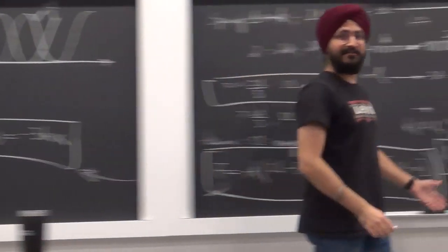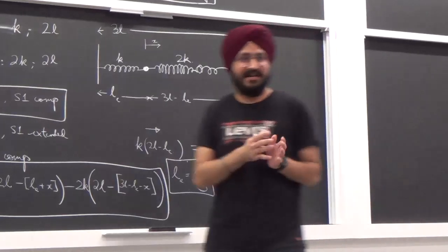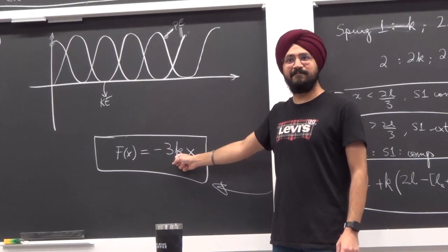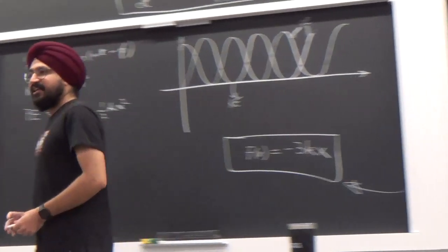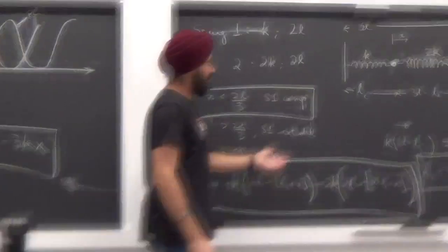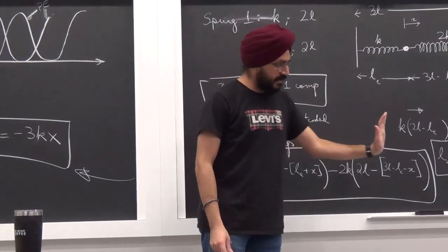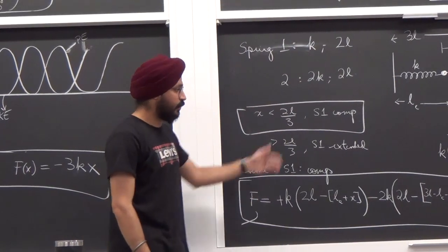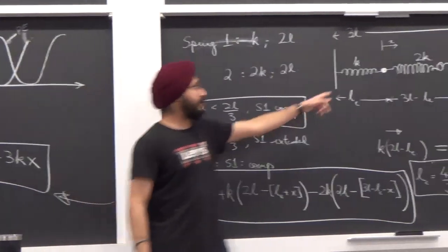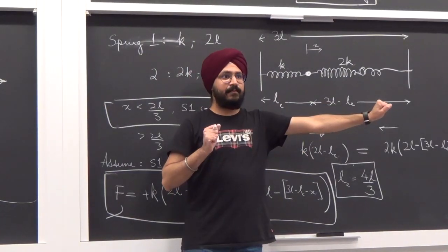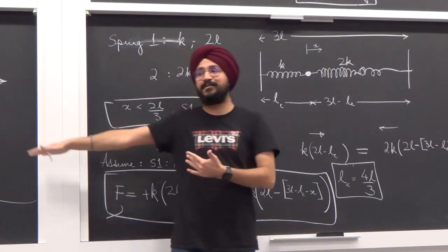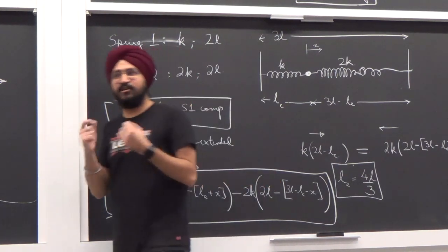So the net force is F = -3k·x regardless of the assumed case. The effective spring constant is 3k. The key lesson: if unsure about compression vs. extension, assume a case, work consistently, and trust the math — the sign of the result will confirm or correct your assumption.